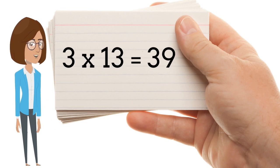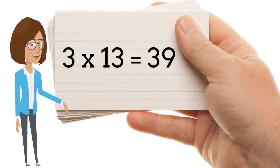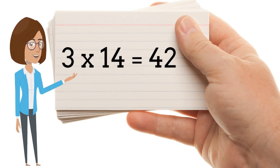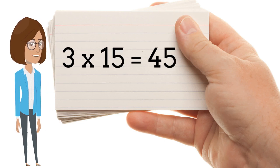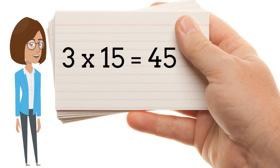3 x 13 is 39. 3 x 14 is 42. 3 x 15 is 45.